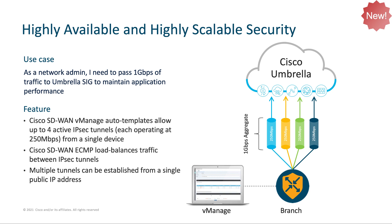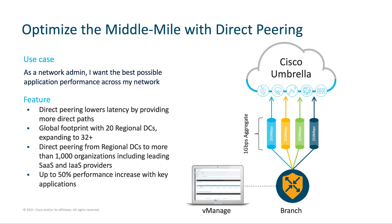But won't this backhaul add latency to my users' traffic, you may ask? Not like you might think. In fact, it may even drive down your latency. Umbrella SIG maintains direct peerings with some of the world's top cloud and internet service providers — some refer to this as optimizing the middle mile. Once your traffic is delivered to Umbrella, there's a good chance it'll ride premium bandwidth into the cloud service provider it was destined for, which minimizes this traffic's overall exposure to the wide-open internet. Curious to learn more about middle-mile optimization? Check out the link below to see our previous video on exactly how this works.